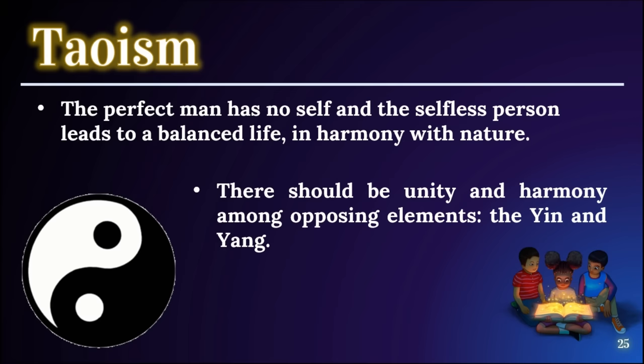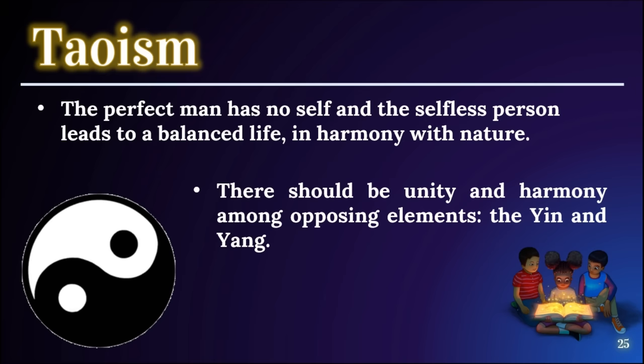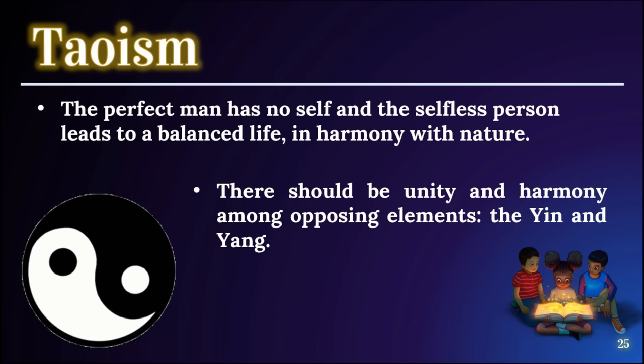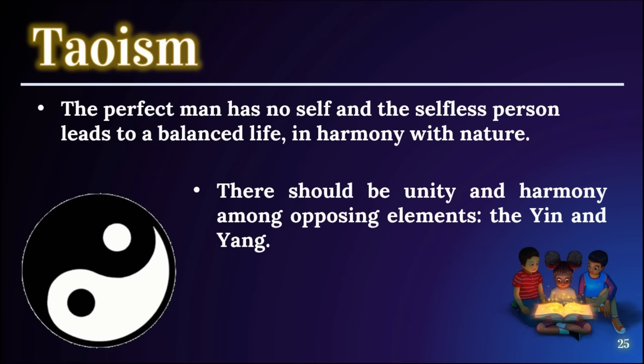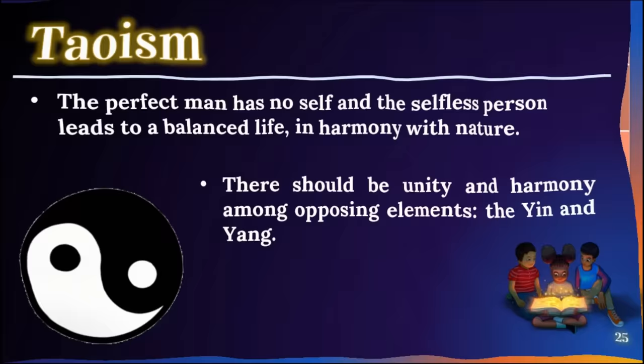Yin is characterized as inward energy — feminine, still, dark, and negative — represented by black. Yang is characterized as outward energy — masculine, hot, bright, and positive — represented by white. Taoists believe that simplicity, spontaneity, and harmony with nature should govern one's life. The balance of yin and yang is important: if yin is stronger, yang will be weaker, and vice versa. When you encounter 'balance and harmony' on an exam, the answer is Taoism.